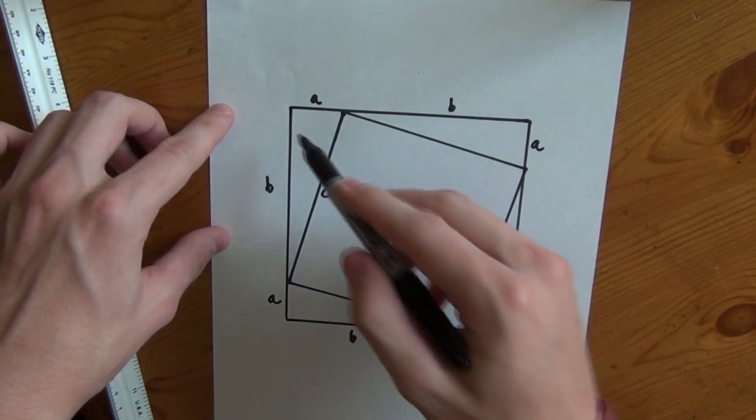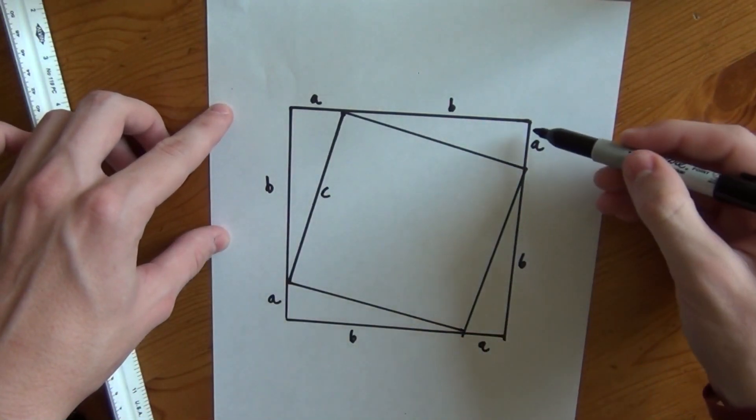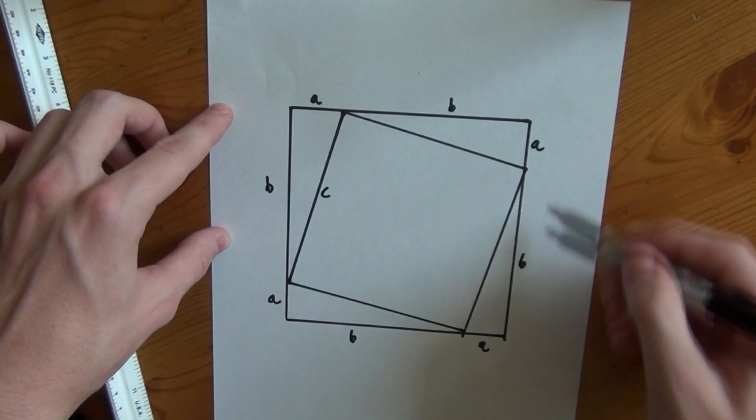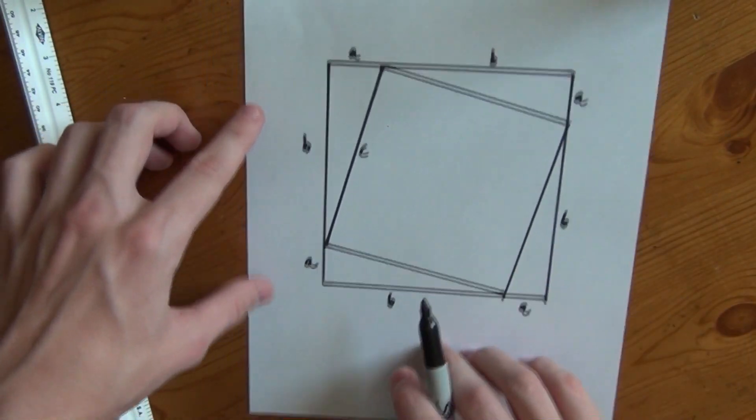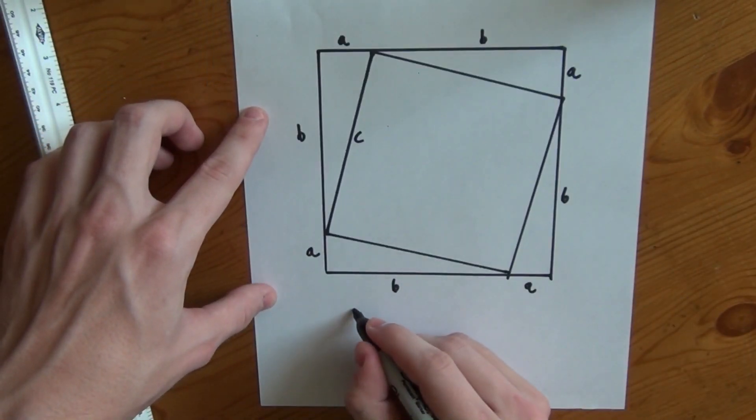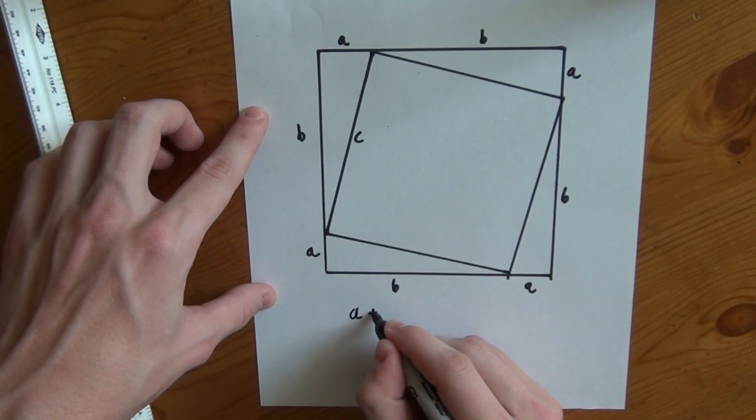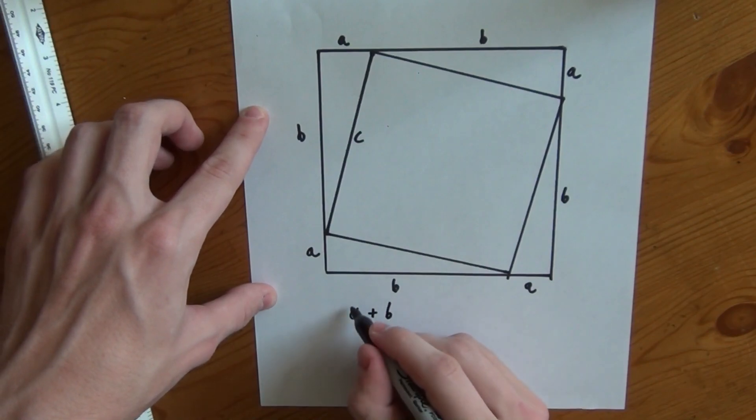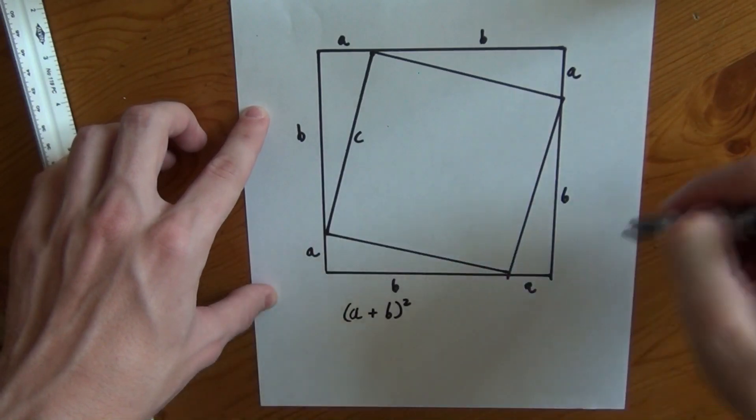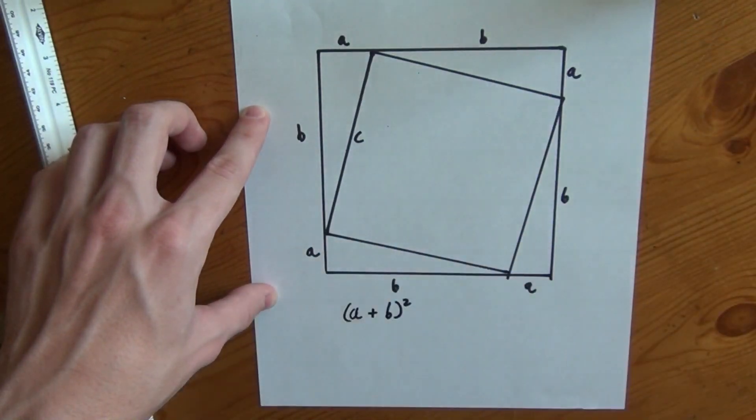Due to the laws of squares we know that this side times this side equals the area of the square. So this side here is A plus B squared and that's the area of everything inside the outer square.